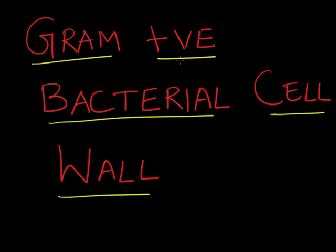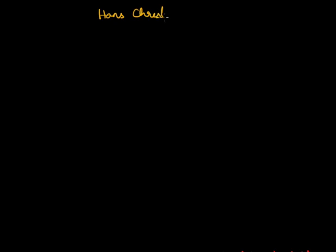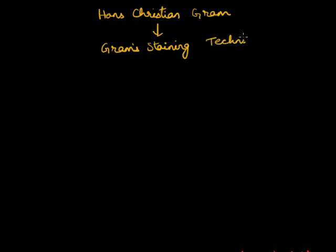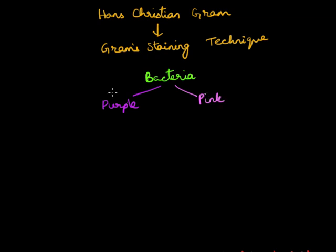The subject of this video is a bacterial cell wall. Long ago, there was a bacteriologist named Hans Christian Gram. This guy developed a staining technique called the Gram staining technique, to distinguish between the two major classes of bacteria. When followed, this staining technique stained some bacteria purple and some bacteria pink.